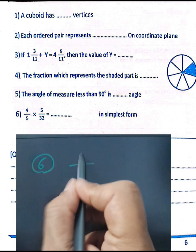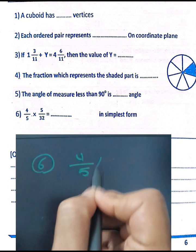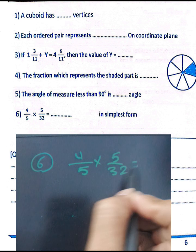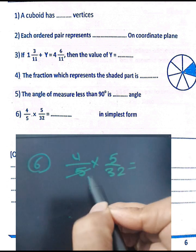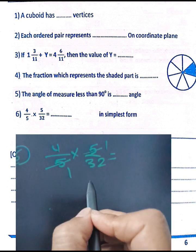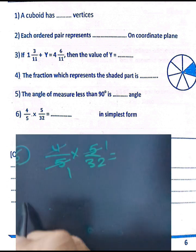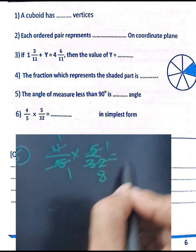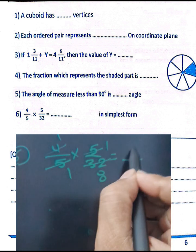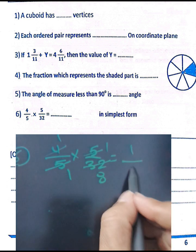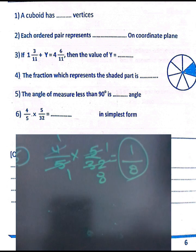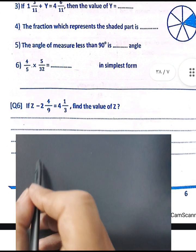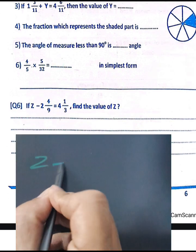Question number six: four over five times five over thirty-two. Simplify: five divided by five equals one, four divided by four equals one, thirty-two divided by four equals eight. So the result is one over eight.